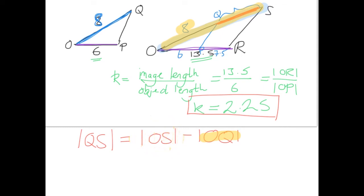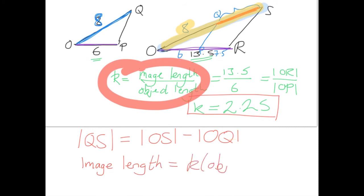So we need to find OS. Using our formula for K here, we can say, if we rearrange it, that image length is equal to K times your object length.